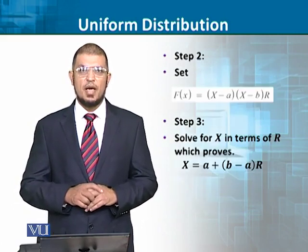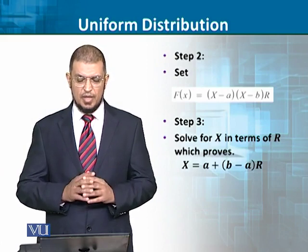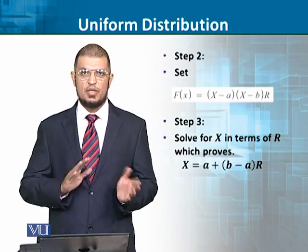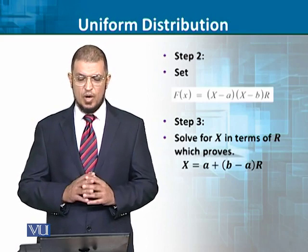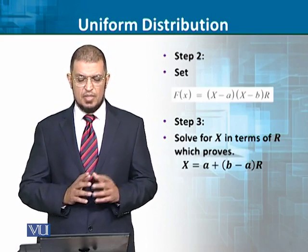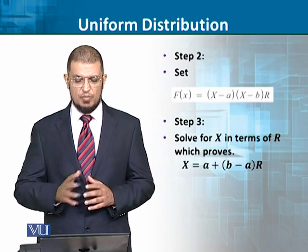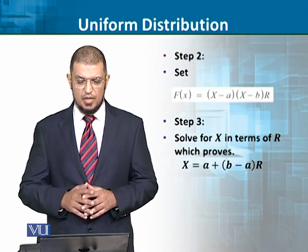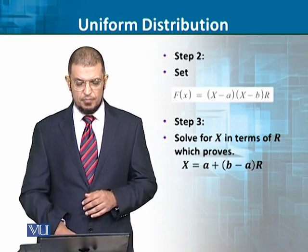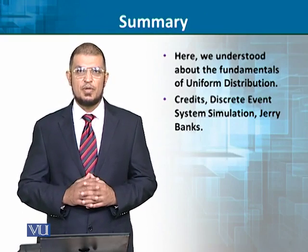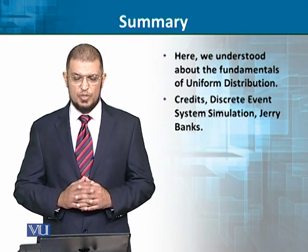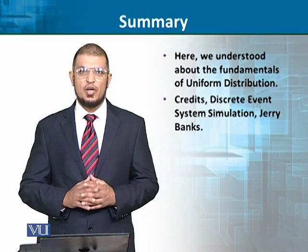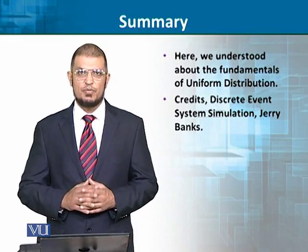Step 2: this is equal to x minus a, into x minus b, times r. The third step: x is expressed correctly in terms of r as x equals a plus (b minus a) times r. So we have looked at the fundamentals of the uniform distribution, which is a continuous distribution in contrast to other distributions that we have studied.